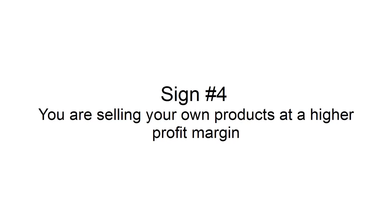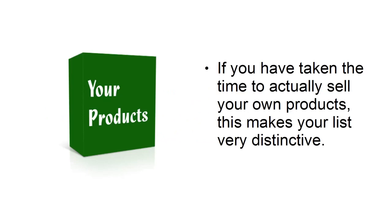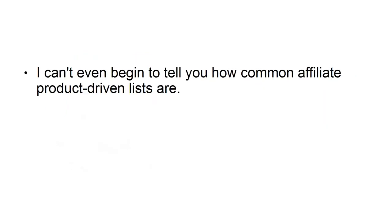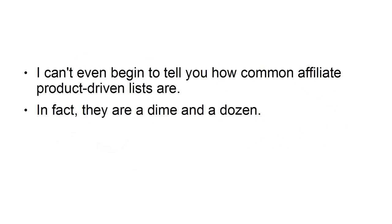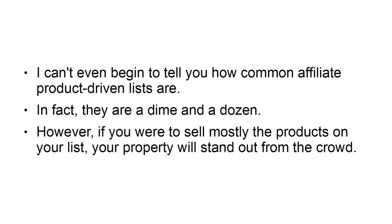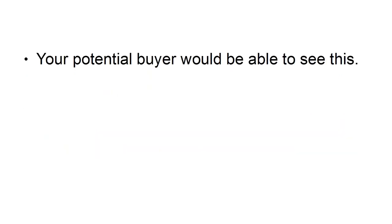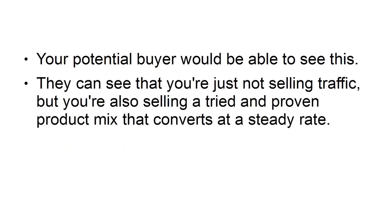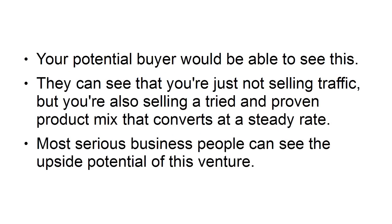Sign number 4: You are selling your own products at a higher profit margin. If you have taken the time to actually sell your own products, this makes your list very distinctive. Affiliate product-driven lists are a dime a dozen — however, if you are selling mostly your own products on your list, your property will stand out from the crowd. Your potential buyer can see that you're not just selling traffic but also selling a tried and proven product mix that converts at a steady rate, and most serious business people can see the upside potential of this venture.